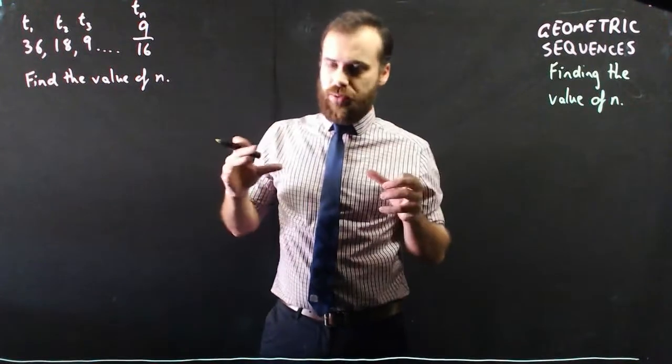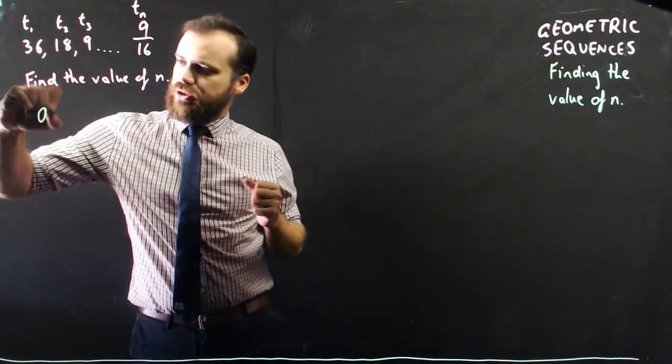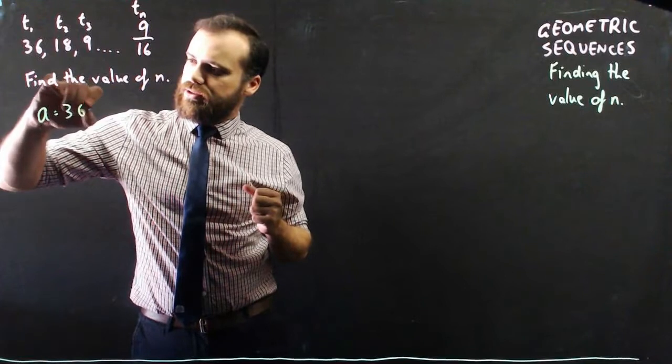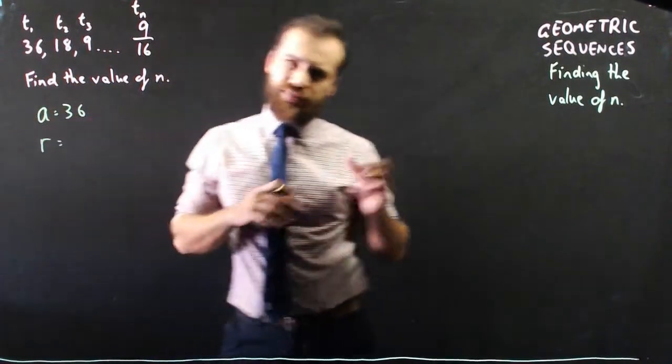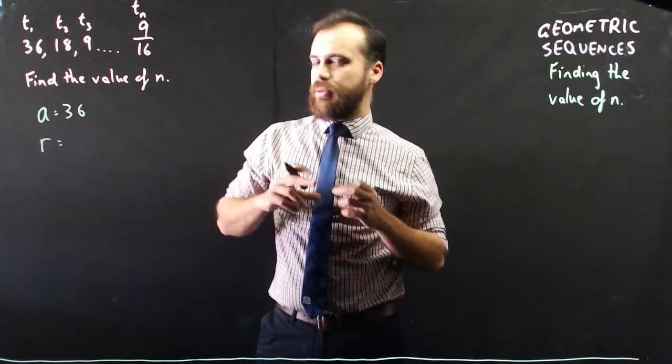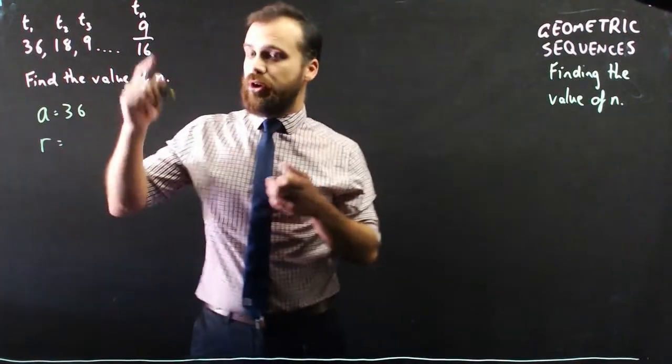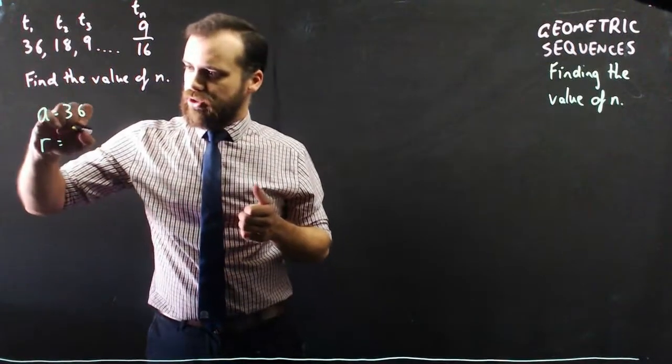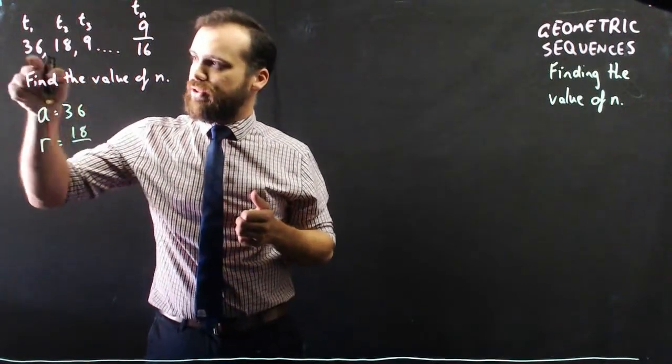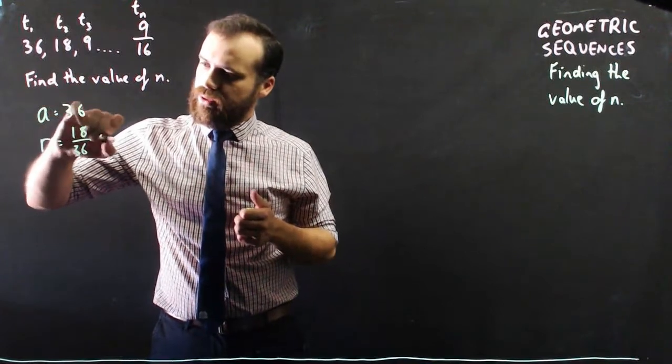So, let's write down what we know. We know that the first term is equal to 36. Now, the common ratio, I let the cat out of the bag, it's one half, but to figure it out, you can just take one term and divide it by the previous term. So the common ratio is 18 over 36, which is one half.